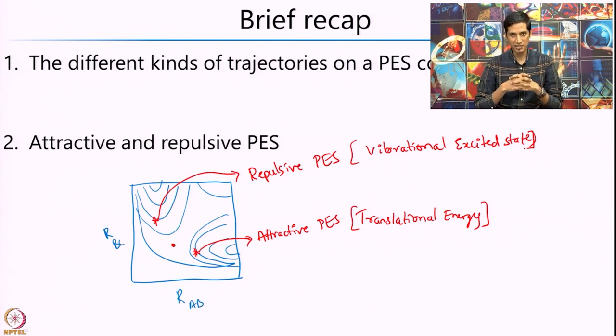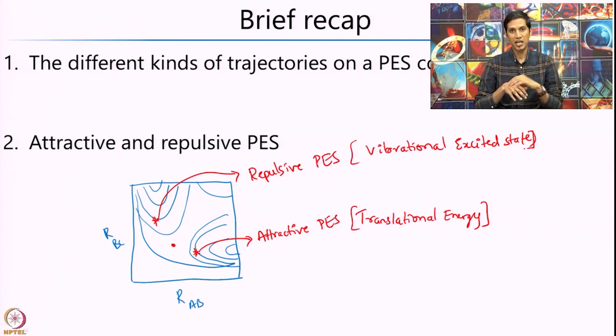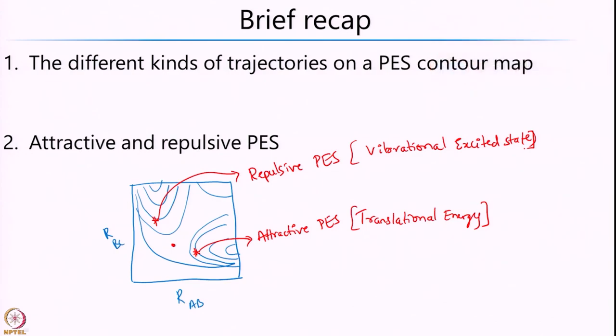In the case of the repulsive, if the molecule is in the vibrationally excited state, that would lead to the formation of the product. This was primarily because if the molecule is in the vibrationally excited state, it could go across the barrier or the corner it encounters and then go over the saddle point to reach the product. The reason one studies this is that if you know whether a system has an attractive or repulsive potential energy surface, you can ensure molecules are in the vibrationally excited state by pumping them to higher excited states, which ensures products are formed far more easily.